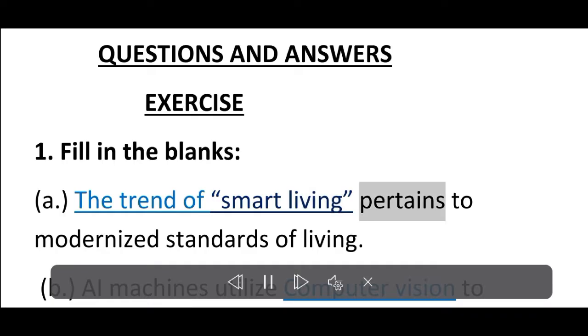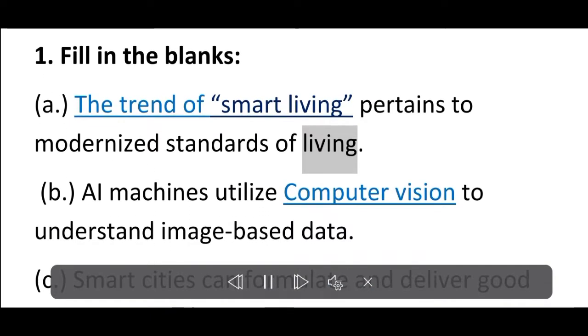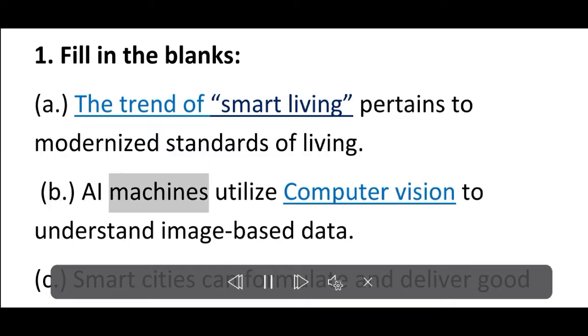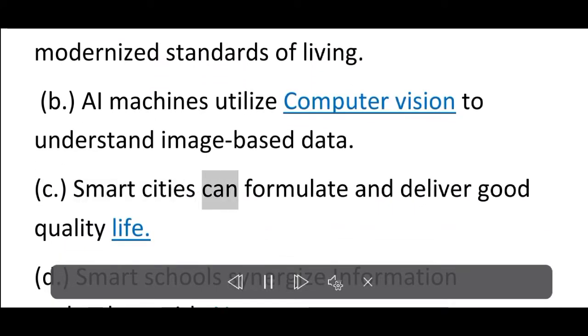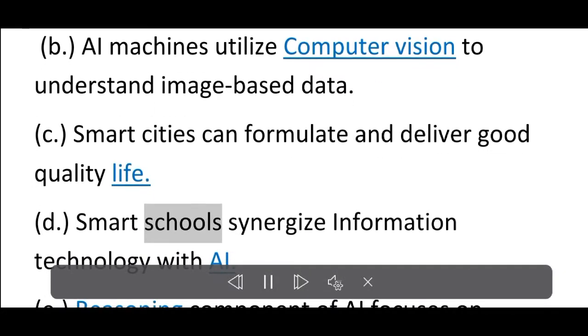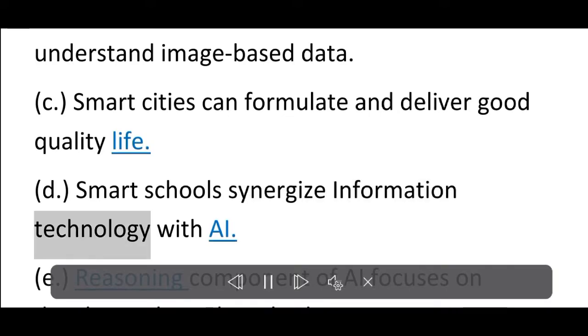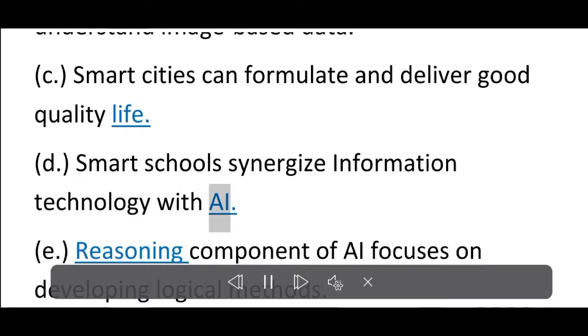A. The trend of smart living pertains to modernized standards of living. B. AI machines utilize computer vision to understand image-based data. C. Smart cities can formulate and deliver good quality life. D. Smart schools synergize information technology with AI. E. Reasoning component of AI focuses on developing logical methods.